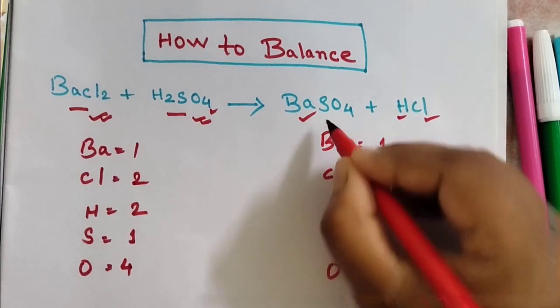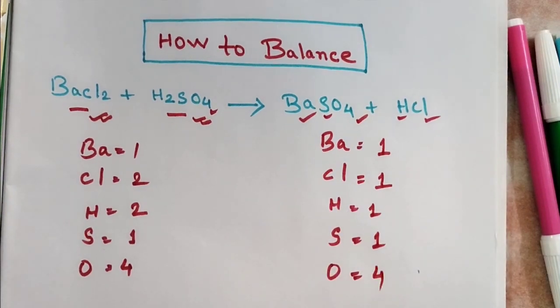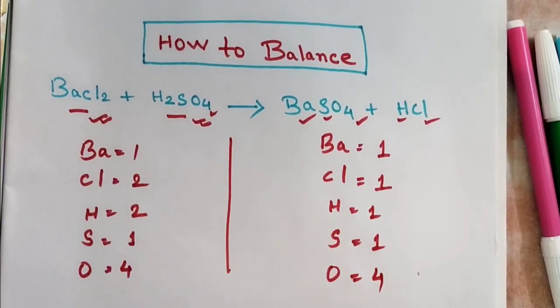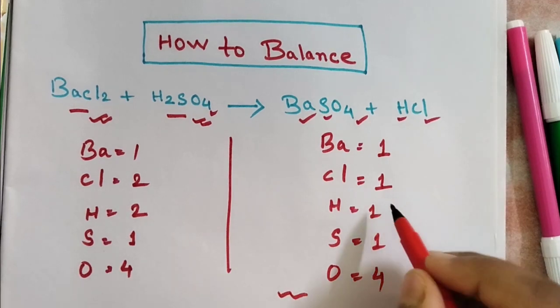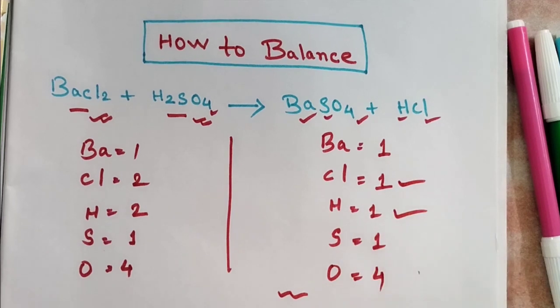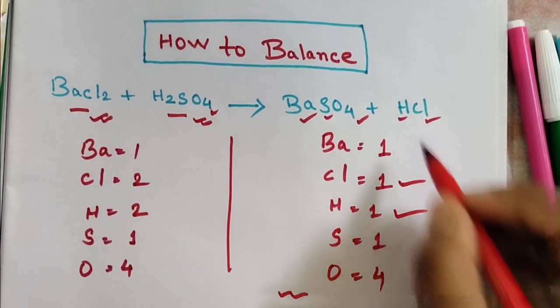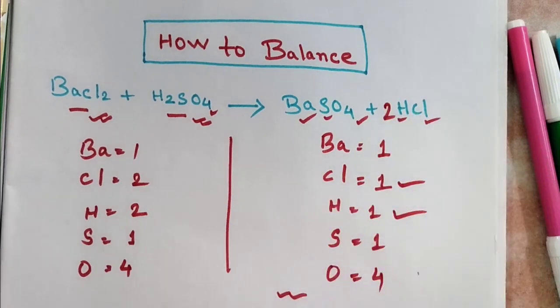So here you can see the equation is almost balanced. We only need to change the number of chlorine and hydrogen. If I put 2 in front of HCl, the number is changed.